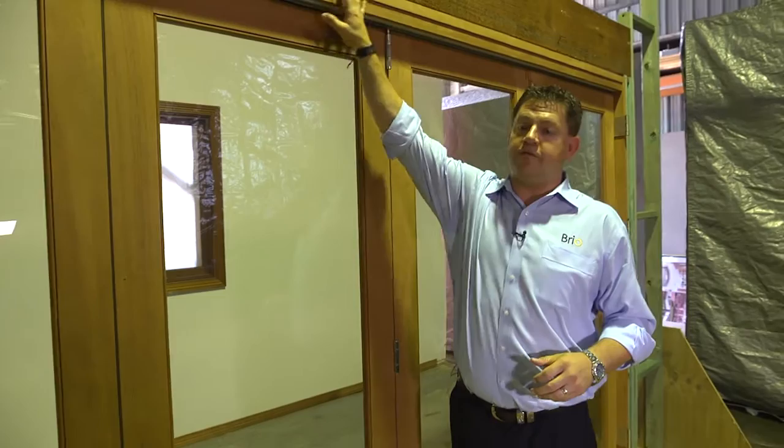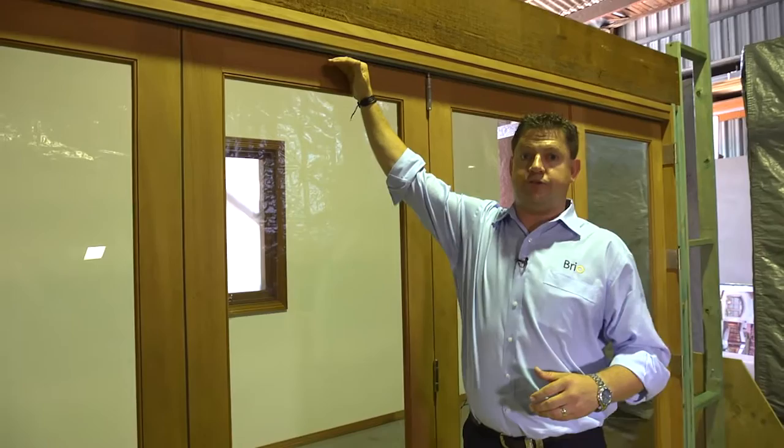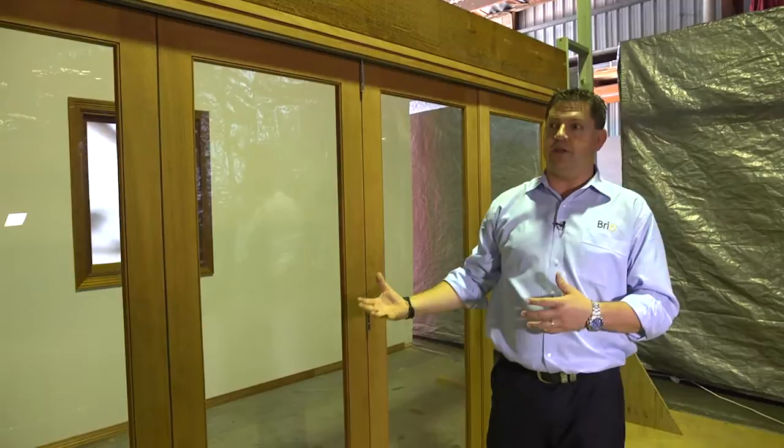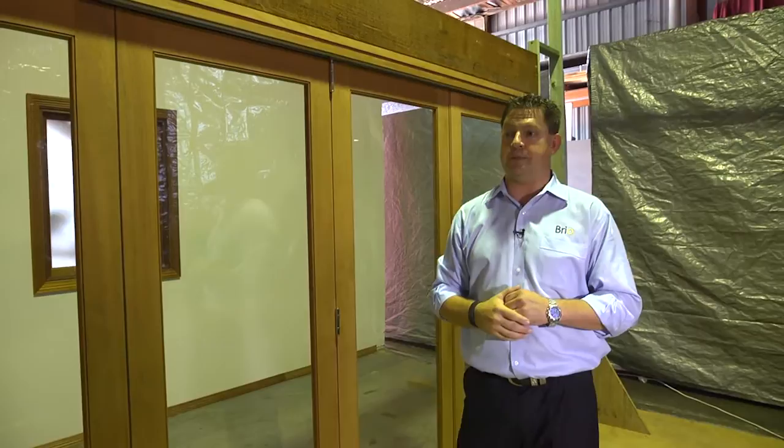Areas that can cause issues with your bifold system are your lintel. If your lintel is installed incorrectly and sags over time, this reduces your clearances which then makes the door bind or rub on the sill. If the lintel sags too far, there's just not enough clearance space to make adjustments to get that to clear.